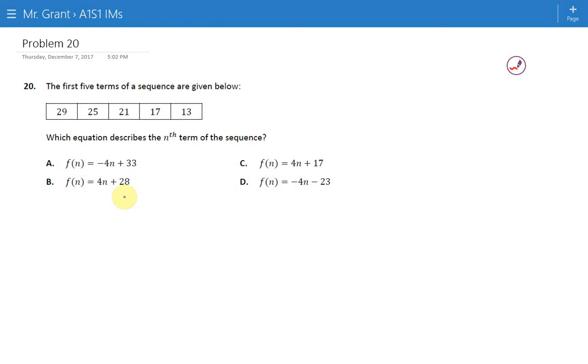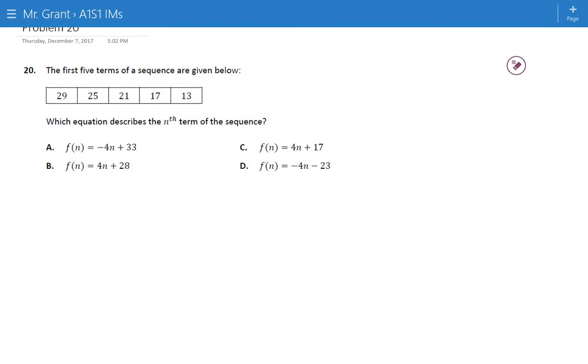We have a sequence below. Remember, a sequence is just a list of numbers, and although they give it to you like this, I would heavily suggest you think about this in terms of a term number, because they're asking for an nth term, and then the term number's actual value. So the way I organize this is we have our term number, which is called n, and whatever number they give you first is always your first term. So your first term in this case is 29, your second term is 25, 3 is 21, 4 is 17, and 5 is 13.